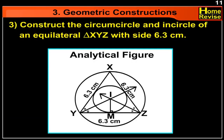Construct the circumcircle and incircle of an equilateral triangle XYZ with side 6.3 cm.